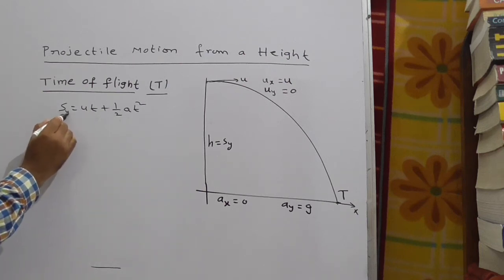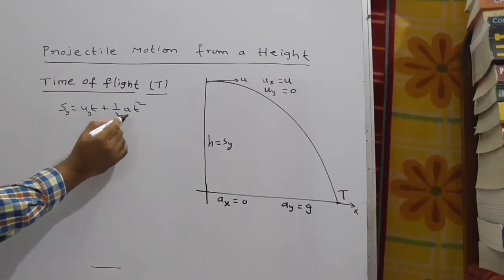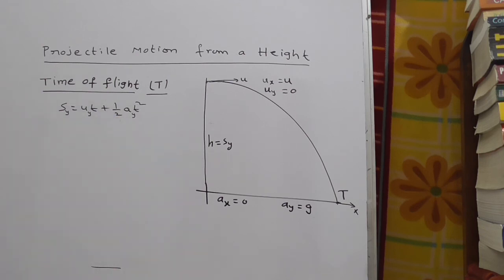So apply y here. Sy equals uy t plus 1 by 2 ay t square. So here sy is nothing but h.